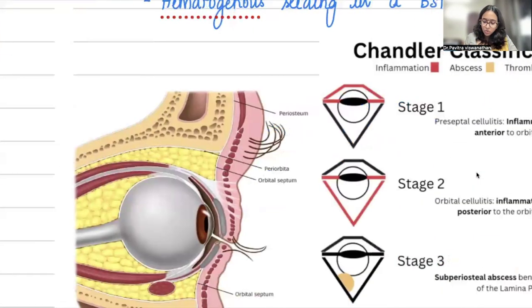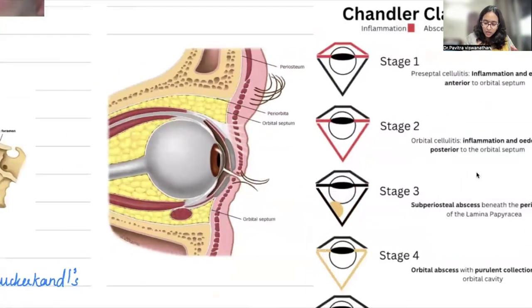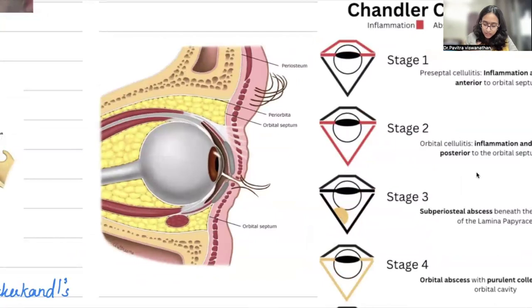You need to know whether it is preseptal or orbital cellulitis. What is the anatomical distinction? This is a cut section of the eye. You have skin, subcutaneous tissue, muscle, and beneath that you have an orbital septum up and down. In between is the eye, muscle layer, and fat. Any infection in front of this orbital septum is called preseptal cellulitis. Anything behind this orbital septum is called orbital cellulitis. Remember, even though we call it orbital cellulitis, infection doesn't touch the globe—it involves the fat and muscle.